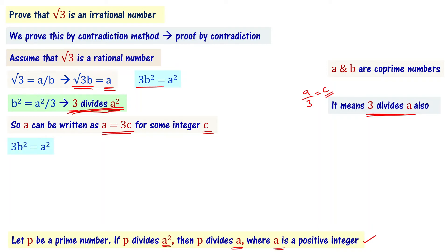We already have 3b squared equals a squared. Now substituting a equals 3c into this equation, we get 3b squared equals 9c squared. Dividing both sides by 3 gives b squared equals 3c squared.